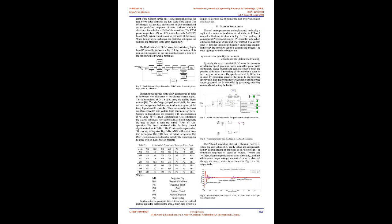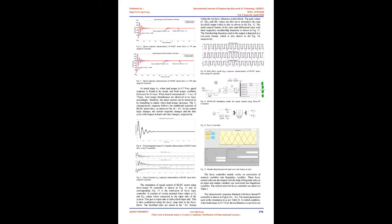The block sets of the BLDC motor drive with fuzzy logic-based PI controller are shown in Fig. 2. It has the feature of gain-varying capacity as per the operating point, giving optimum speed variable responses. The scheme comprises a fuzzy controller with Error (E) and Change in Error (D) as inputs, normalized to −1 to +1 using the Scaling Factor Method. The TRIMF-type membership functions are used to represent both input and output signals of the fuzzy logic-based PI controller. These membership functions are then converted into certain fuzzy logic statements.